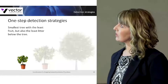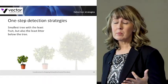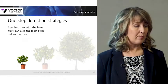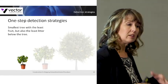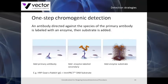The first type is a one-step detection strategy. Typically, after your primary antibody incubation, you'll have a single detection step. This is a small tree with the lowest amount of fruit, but also the least amount of background. In one-step chromogenic detection, after your primary antibody step, you add a secondary antibody directed against the species of the primary, conjugated to an enzyme that develops a substrate and deposits a precipitate at the site of your target antigen.